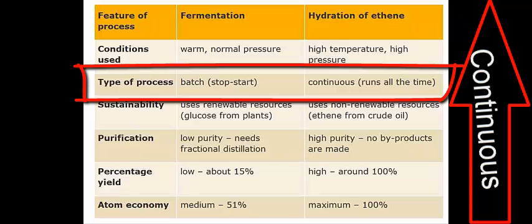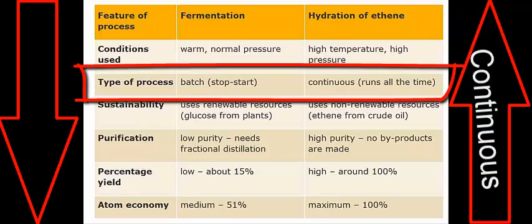In contrast, the fermentation of glucose with yeast to produce ethanol is a batch process, which means it stops and starts. The raw materials are added together in large vats, fermentation is allowed to take place, then the process is stopped and the ethanol removed. Fermentation is a slow process and can take place over several days, producing smaller volumes of ethanol in the same period of time.